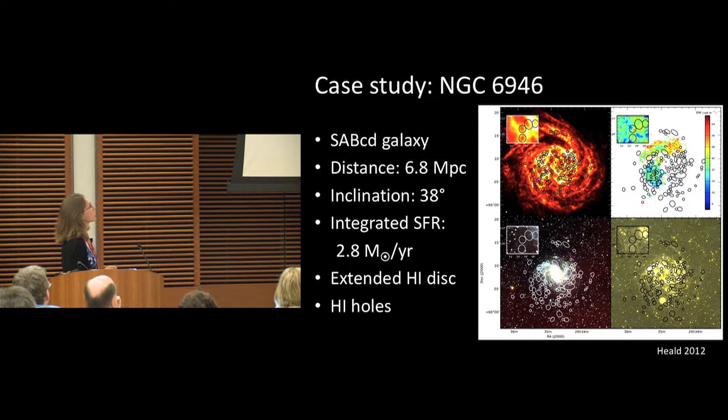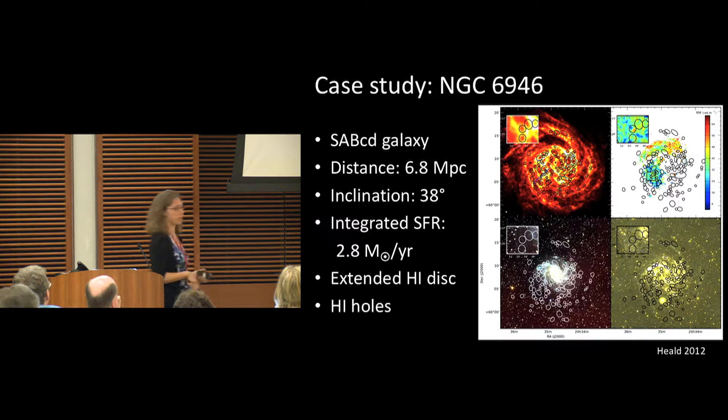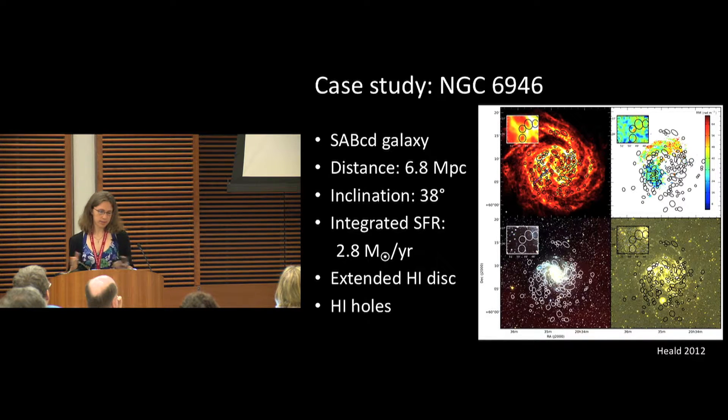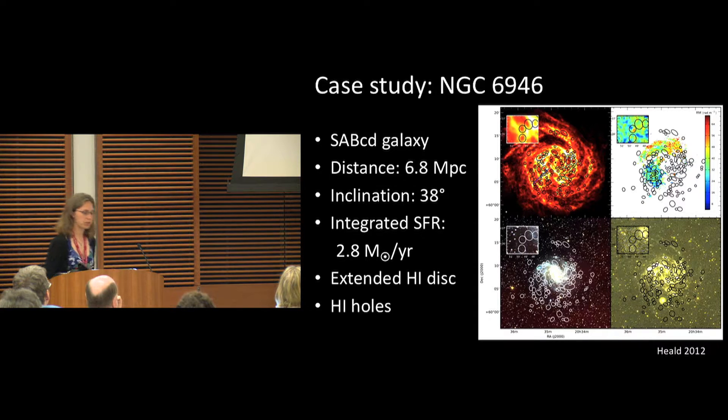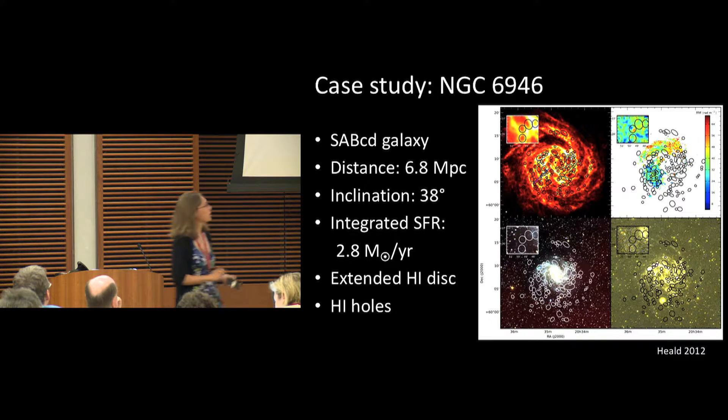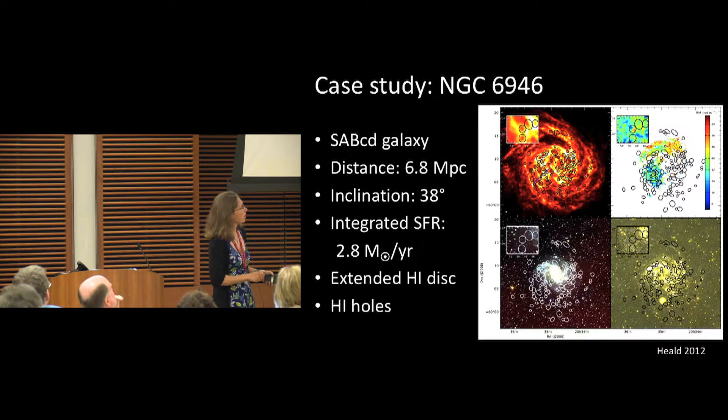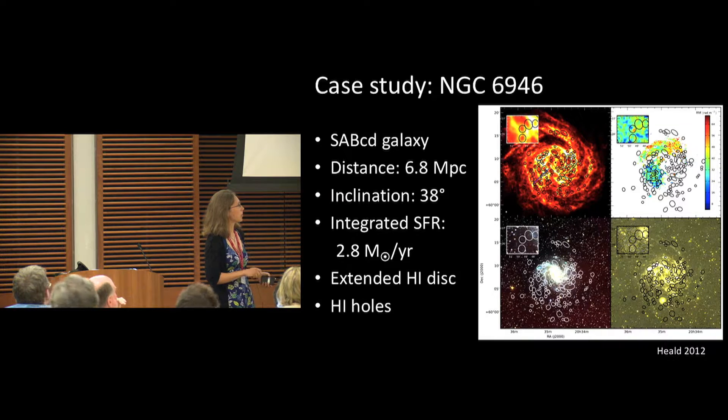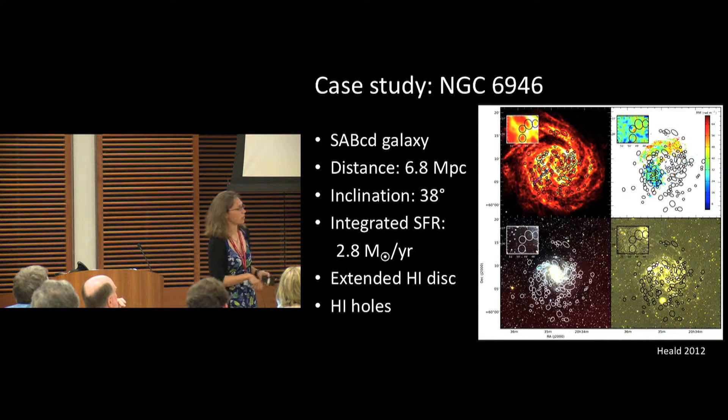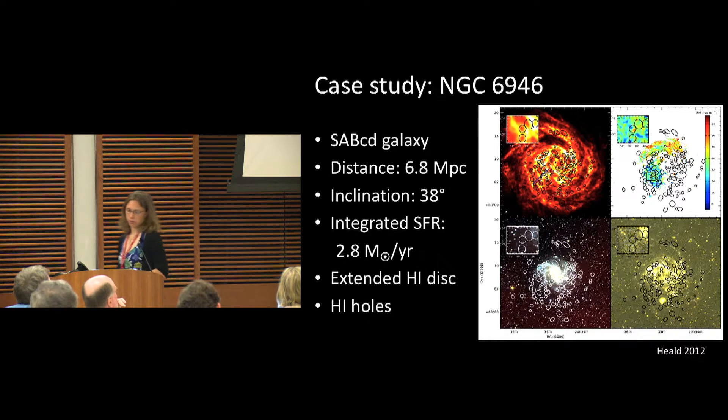Looking at NGC 6946, a nearby spiral galaxy with an extended HI disc, it's slightly inclined at 38 degrees, moderate star formation. Some interesting HI holes have been detected. Here we've got the optical emission tracing the optical arms, and here we've got UV showing the young star formation.